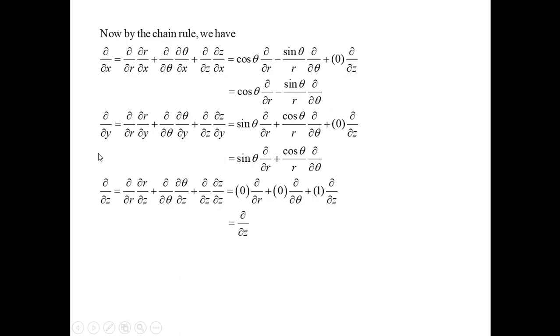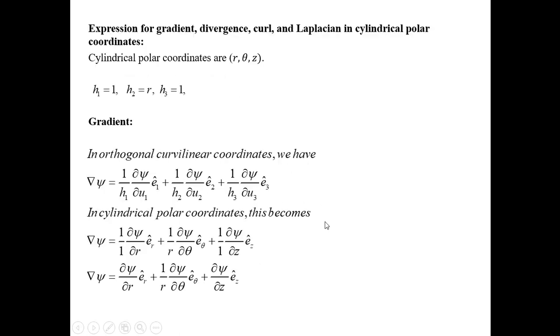Similarly, ∂/∂y = sin θ (∂/∂r) + (cos θ / r)(∂/∂θ). And ∂/∂z = ∂/∂z as it is. These are the differential operators expressed in cylindrical polar coordinates.